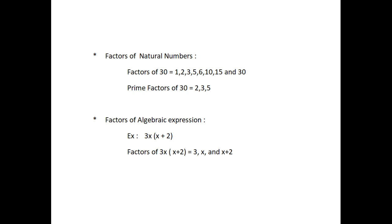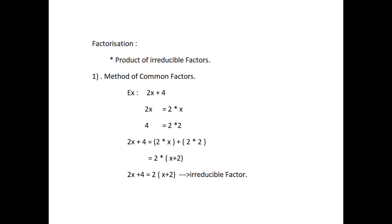Next, we are going to see about factors of algebraic expressions. Consider the expression 3x into (x plus 2). It can be written as a product of factors: 3x into (x plus 2) equals 3 into x into (x plus 2). Here the factors 3, x, and (x plus 2) are irreducible factors of 3x(x plus 2). When we factorize an algebraic expression, we write it as the product of irreducible factors. These factors may be numbers, algebraic variables, or algebraic expressions.